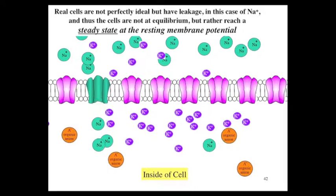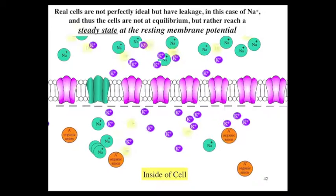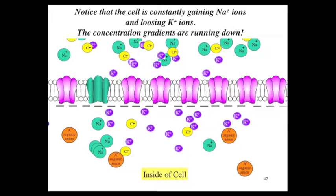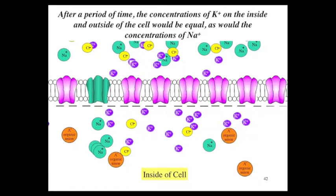The efflux of potassium tries to restore the EK, but you get an influx of sodium in, which reduces the negativity just slightly. This goes on and on, whereby you get an influx of sodium and an efflux of potassium. But notice that the cell is constantly gaining sodium ions and losing potassium ions. The concentration gradients are running down.